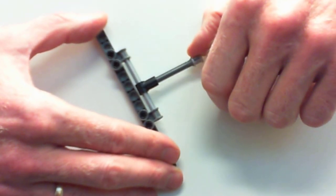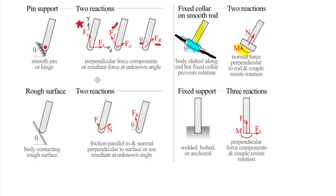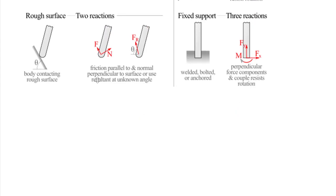Next we have a member contacting a rough surface. A rough surface has friction, so we pick up an additional force parallel to that surface. We still have the normal force perpendicular to the surface, plus a friction force parallel to it resisting motion. I won't go into detail here because this shows up later in the class — we assume everything is friction-free until the friction chapter.